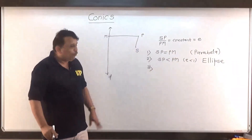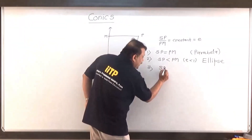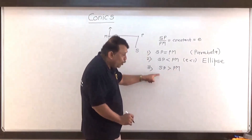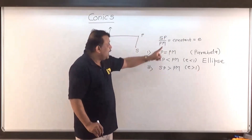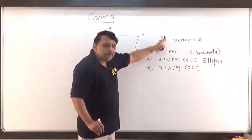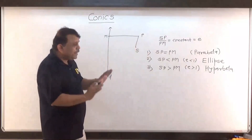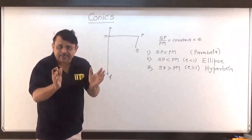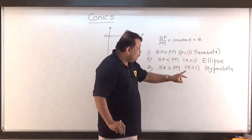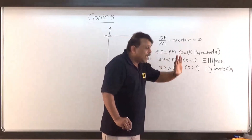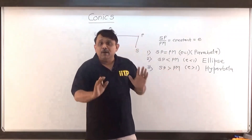The third condition: SP equals PM is done, SP less than PM is done. Now consider SP greater than PM. If SP is greater than PM, then SP upon PM is greater than 1, and since SP upon PM is e, e becomes greater than 1. In that case, the locus of P is called a hyperbola. So one can classify the conic in three categories: when eccentricity equals 1, the conic is a parabola; when eccentricity is less than 1, the conic is an ellipse; and when eccentricity is greater than 1, the conic is a hyperbola.